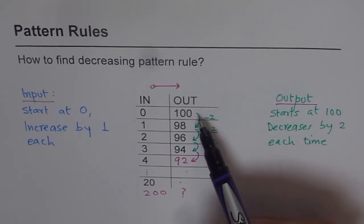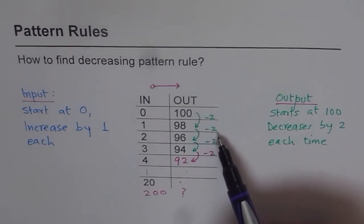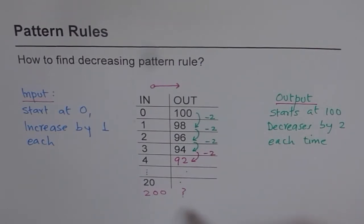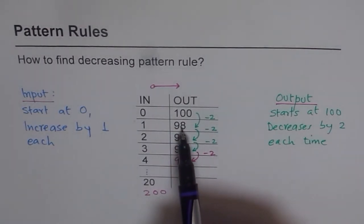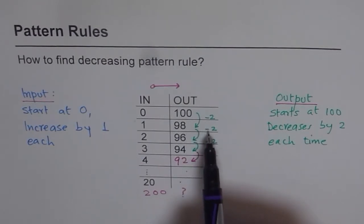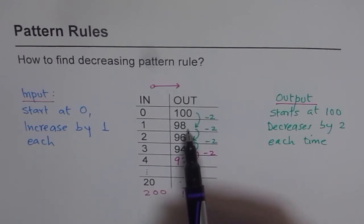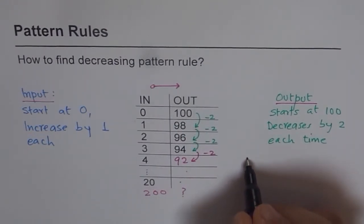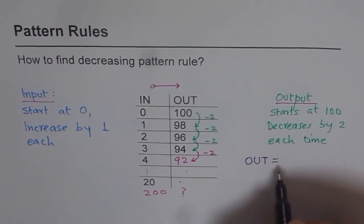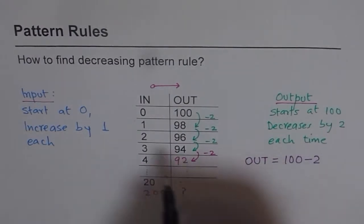Important thing is that output is decreasing by 2. So minus 2 has to do something about it. If I do 1 times minus 2, what do I get? I get minus 2. How do I get 98 and minus 2? Well, I have to take it away from 100 to get 98. That gives me a rule. So, I can say, my output is equal to 100 minus 2 times input.